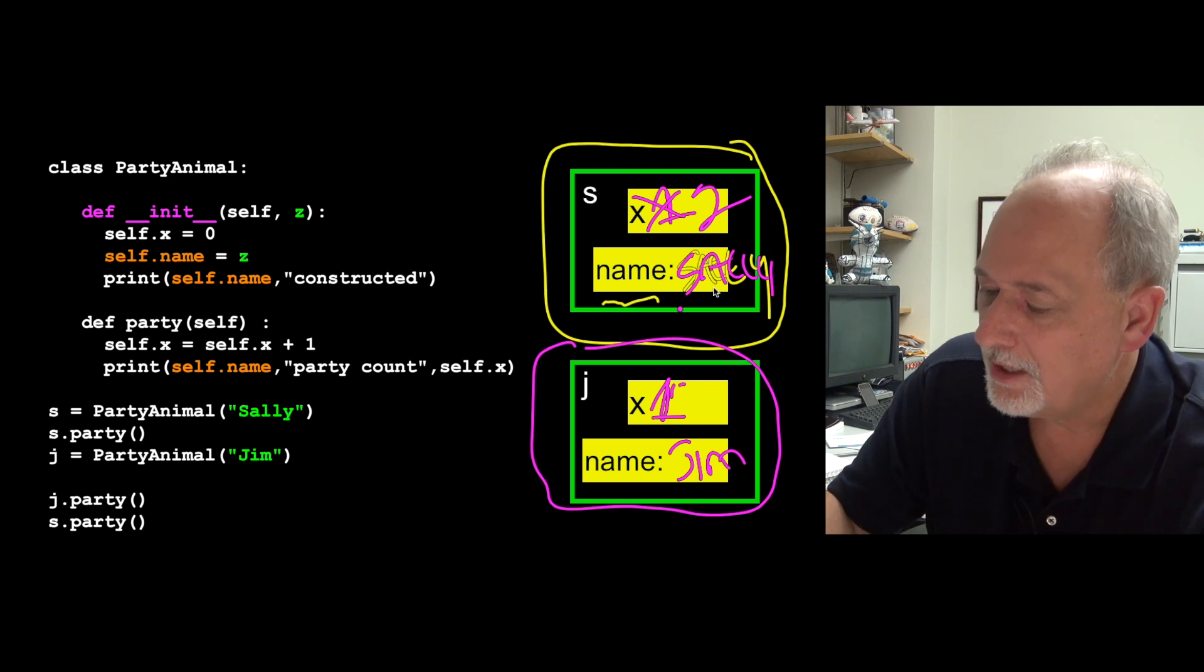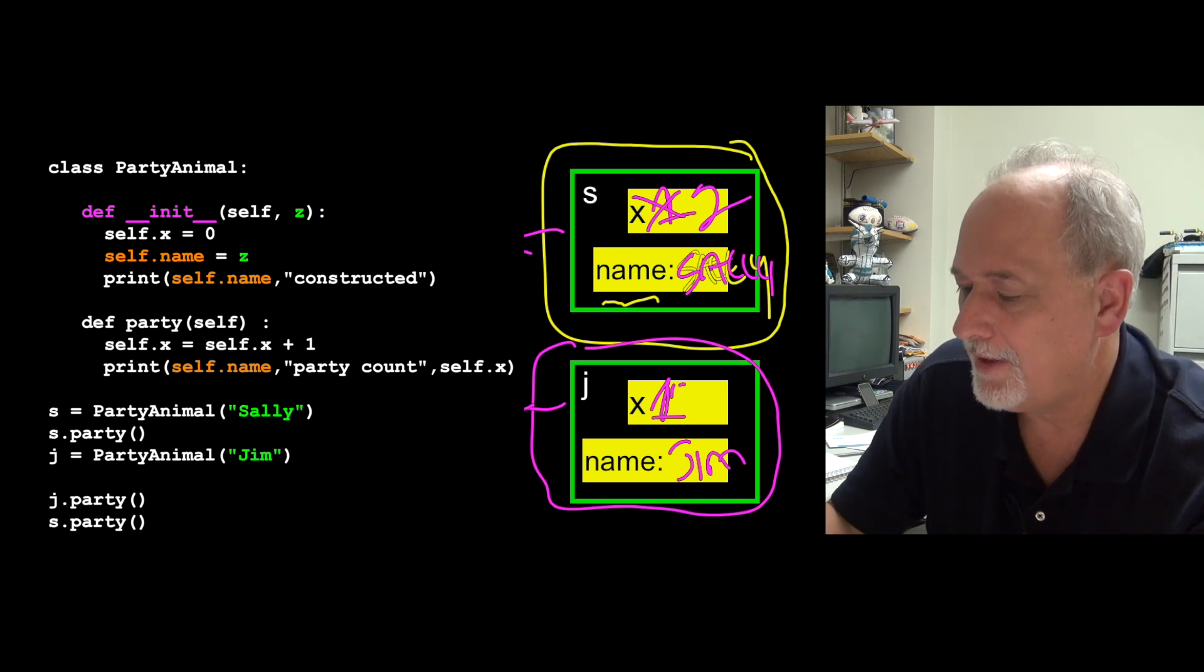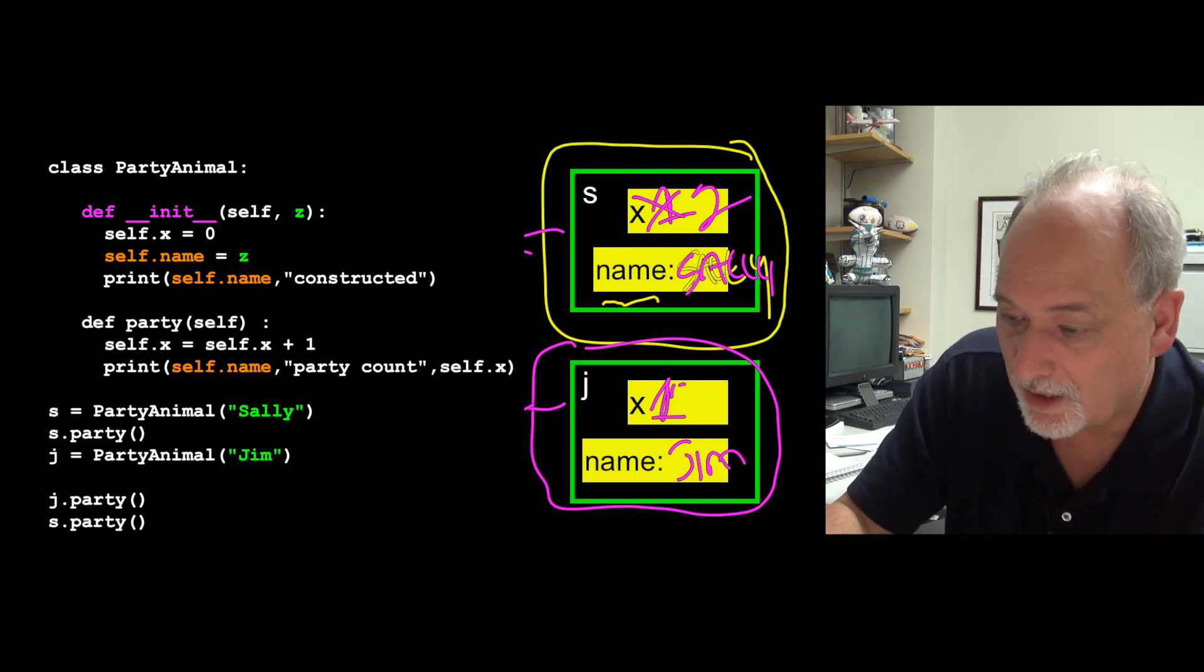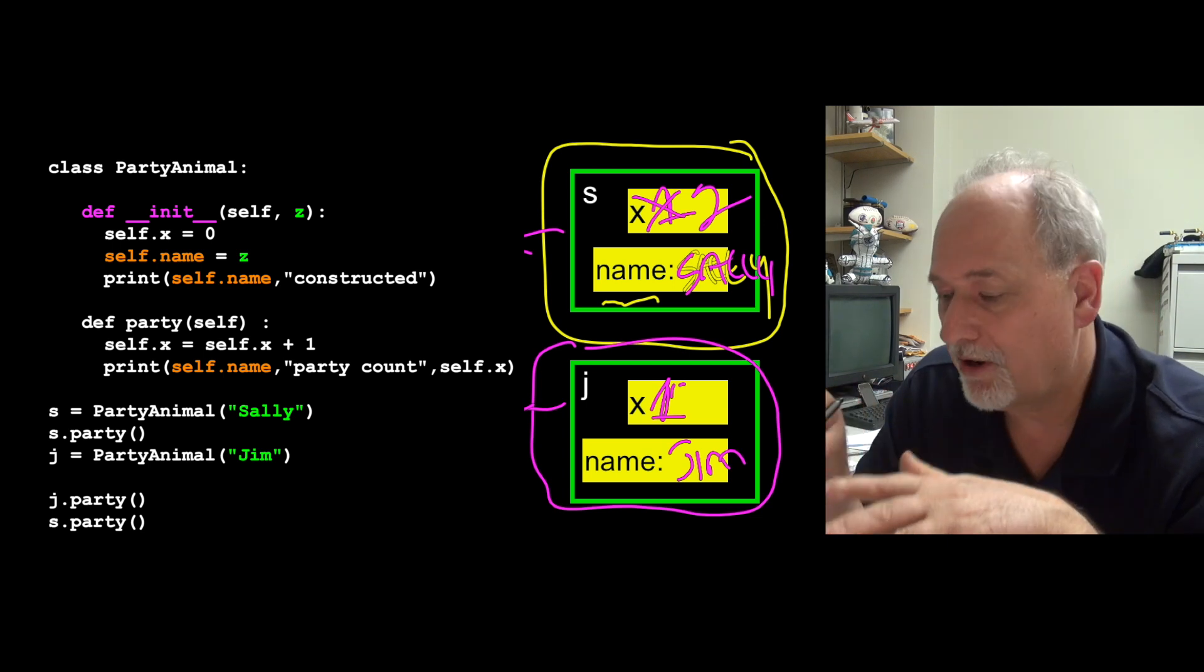And so what happens is, we have now two objects, one in the variable s, and one in the variable j, and they have separate copies of their instance variables. These are the instance variables, or the object fields, or whatever.